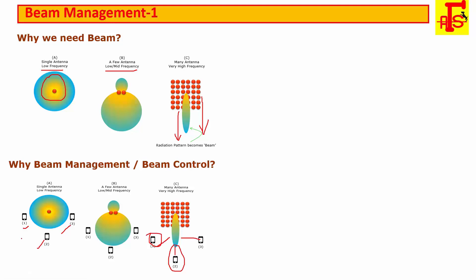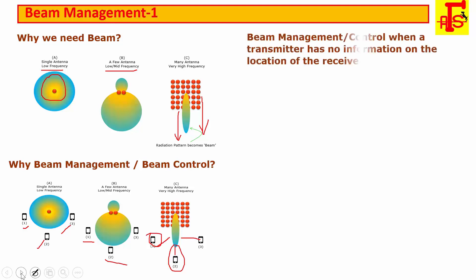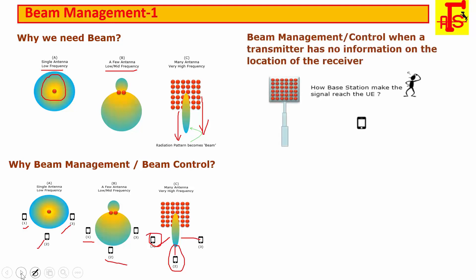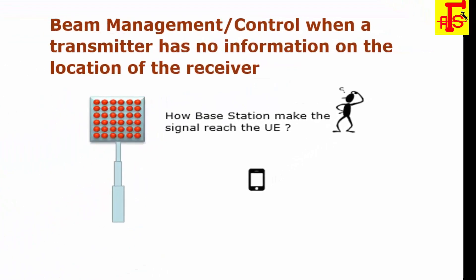Let's think of the following case: there is a base station with massive MIMO operating at very high frequency, and there is a UE around the base station that is just about to turn on — that is, you are switching on the UE. Once the UE switches on, it would start the synchronization process. For this, the base station would transmit a special signal called synchronization signals, and the signal would need to reach every UE around the base station.